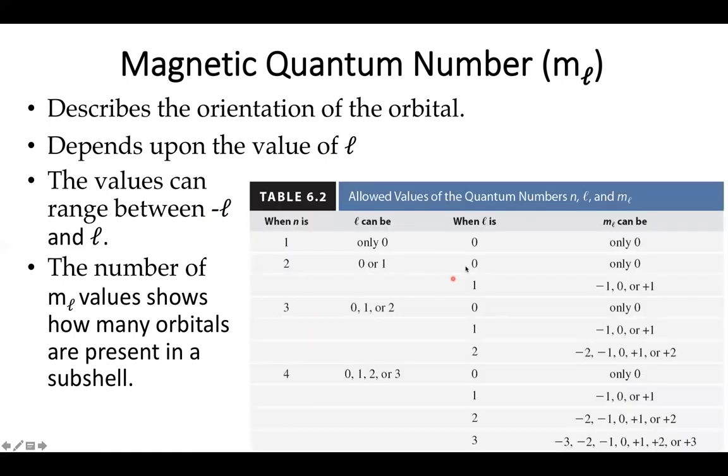If l equals zero, m sub l has to be zero. Because the electron exists in all given directions, so it exists in all given directions.